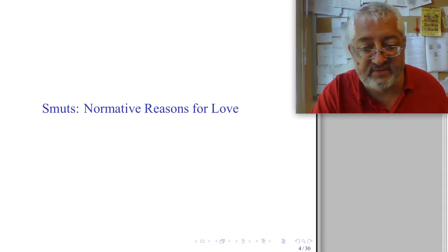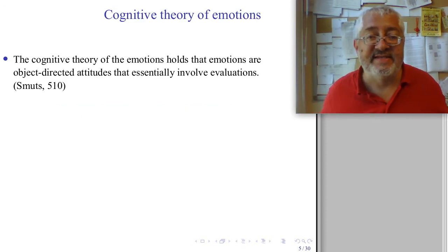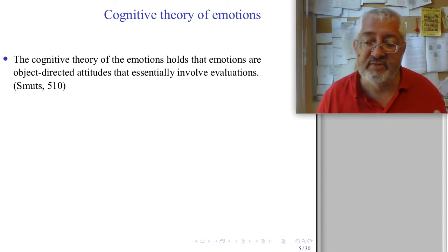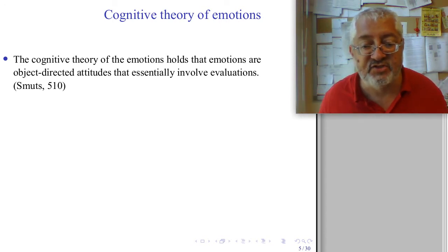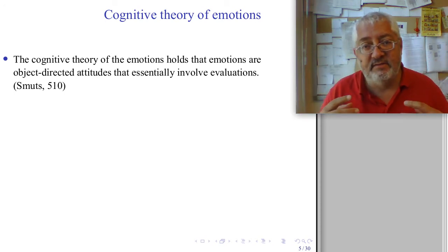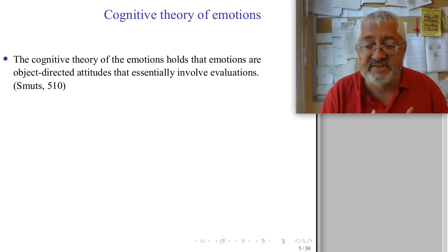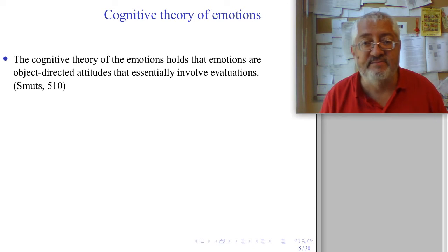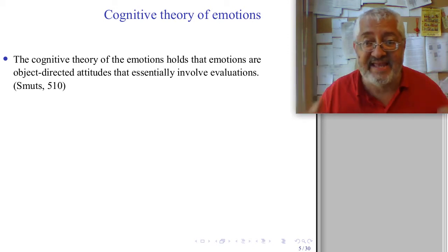Smuts begins his paper 'Normative Reasons for Love' by asking what emotions are. Smuts says that the cognitive theory of emotions is something he wants to examine. The cognitive theory of emotions holds that emotions are object-directed attitudes that involve evaluations. These are all important words. Object-directed means they're directed towards something outside of myself. When I fear something, I fear that thing, and it involves an evaluation that that thing is dangerous.